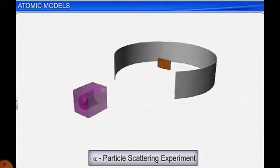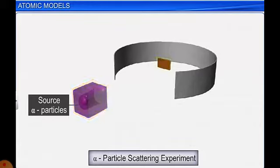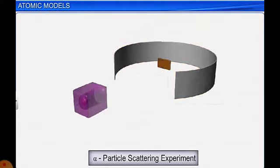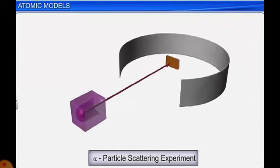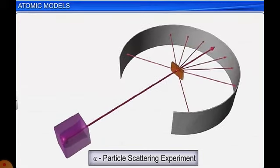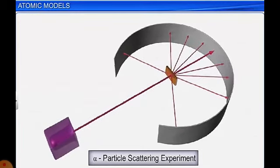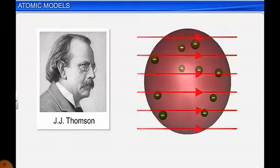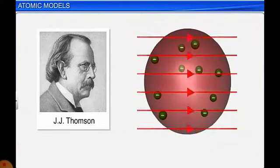In the alpha ray scattering experiment, there is a source emitting alpha radiation, a very thin gold foil, and a circular sheet coated with zinc sulfide (ZnS) fluorescent material. As alpha radiation is emitted from the source, it strikes the gold foil, and the interactions are detected on the circular screen as flashes of light. According to JJ Thomson's model, all radiation should pass in a straight line with no deviation, but the observations were different.